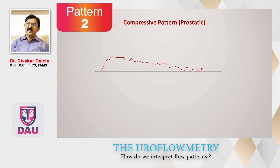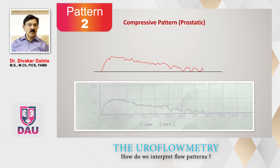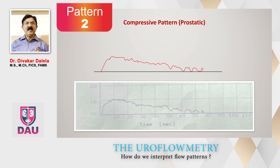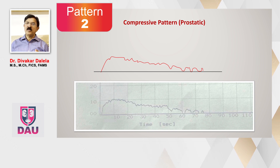This is the graph you will get. The Qmax is usually low — about 8 to 13 ml per second depending on the severity of obstruction. The time to Qmax is short, but after that, the patient voids slowly and the descending limb is therefore more time-consuming.